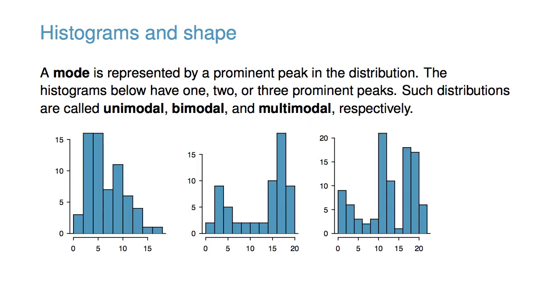A mode is represented by a prominent peak in the distribution. The histograms below have one, two, or three prominent peaks respectively. Such distributions are called unimodal, bimodal, and multimodal.